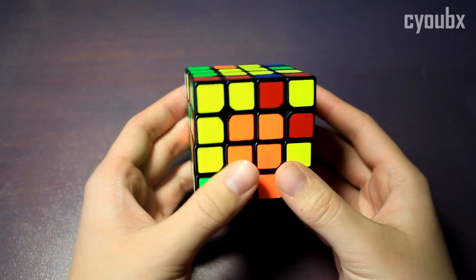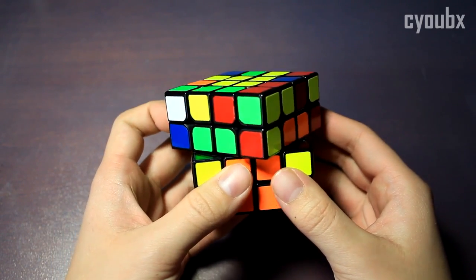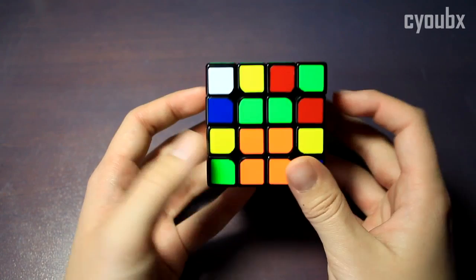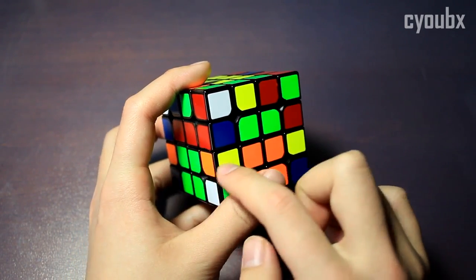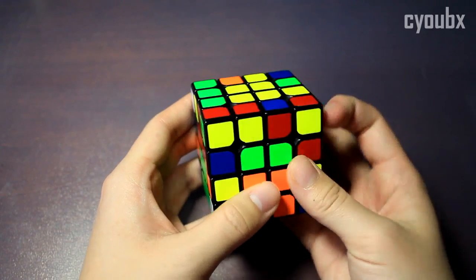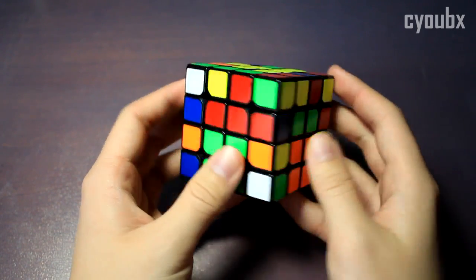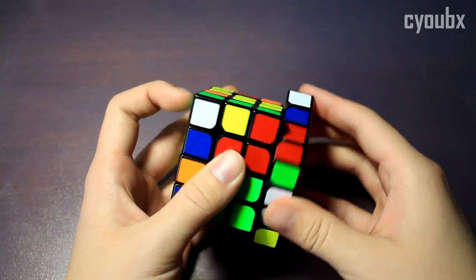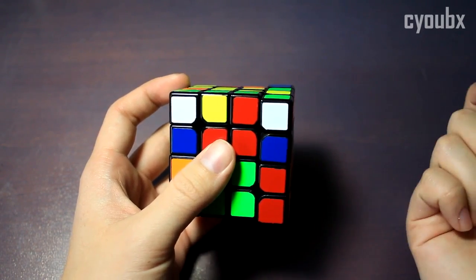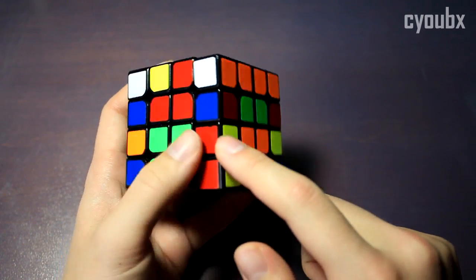So in my case, I always slice with a U prime just to keep things consistent. So I'm going to slice with a U prime and I'm going to be looking at these two pieces. So this is red and yellow, which means this piece has to be red and yellow. That piece is right here. I need to bring it down here. So I'm going to do a cube rotation, and this is only so that I can insert with R and U moves.